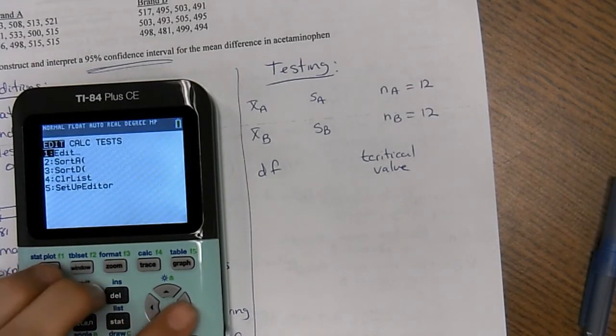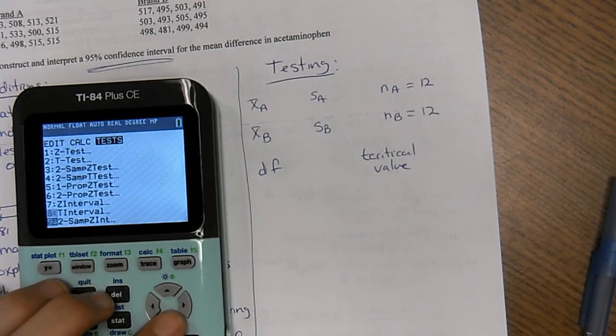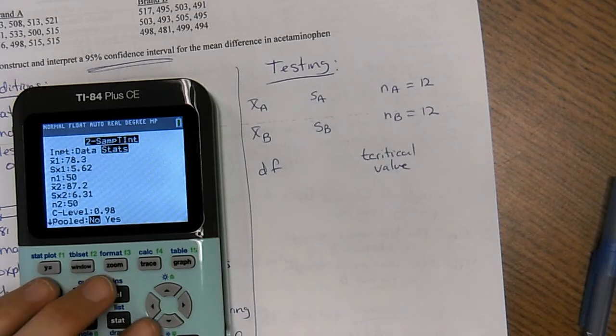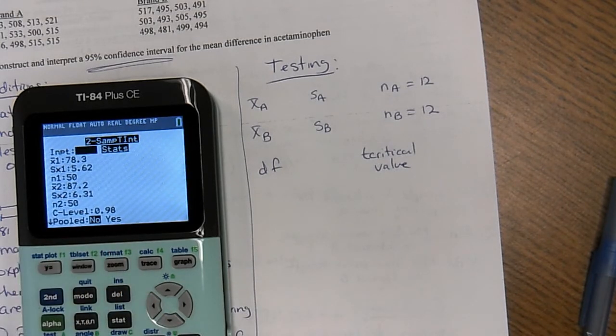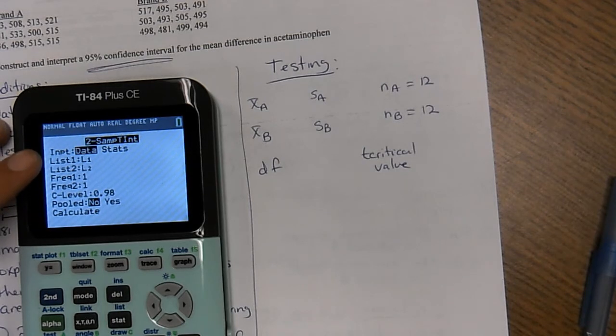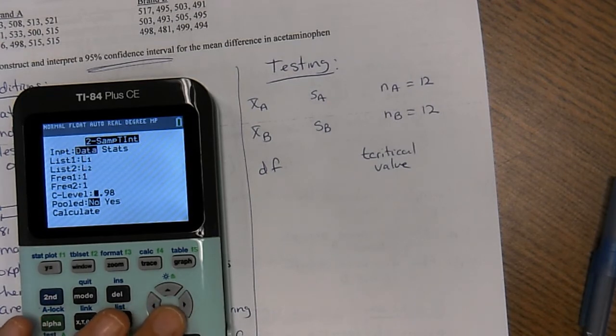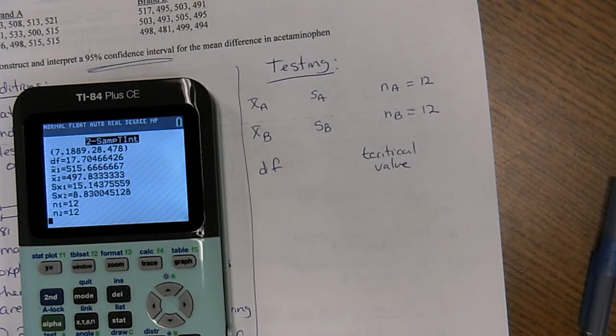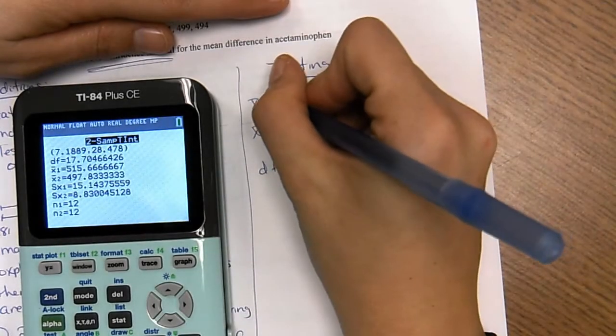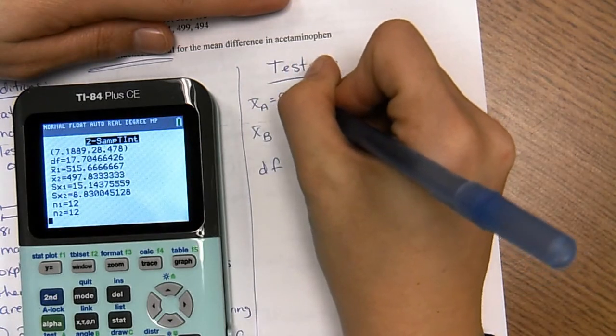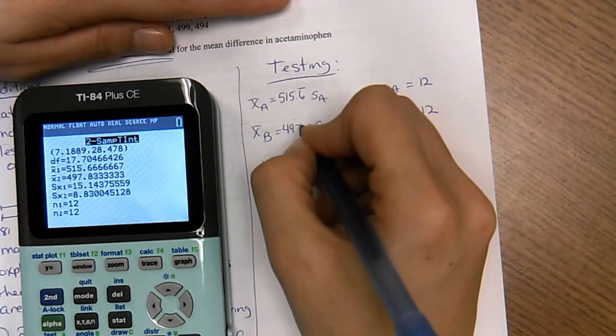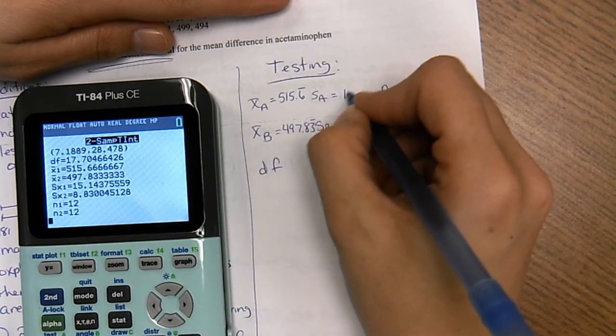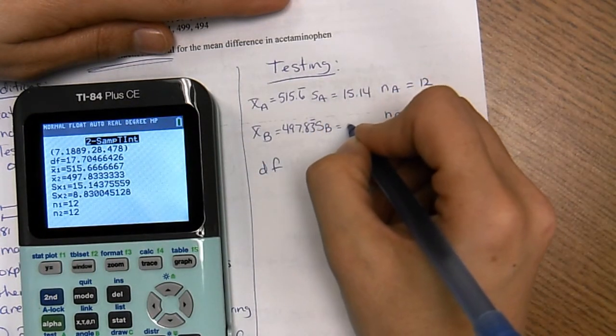So when you go to test zero this time, go to the data side. And then just say list one is list one, list two is list two. Frequency list, just leave one. This time we're doing a 95% confidence interval and we don't want it pooled. So I'm going to write it all out. 515.6 repeating, 497.83 repeating, 15.14, 8.83.